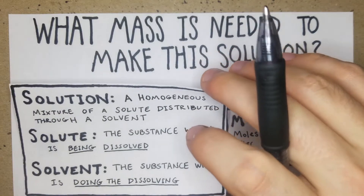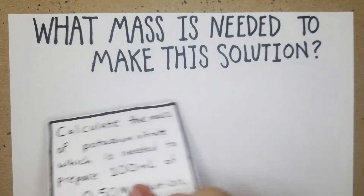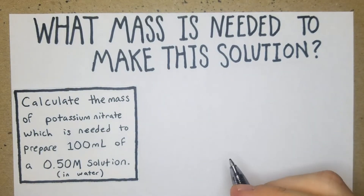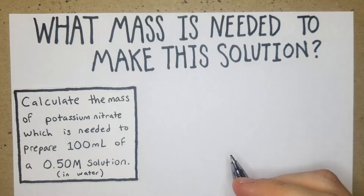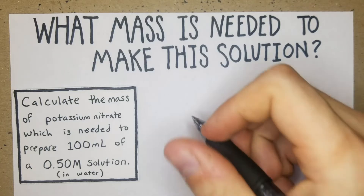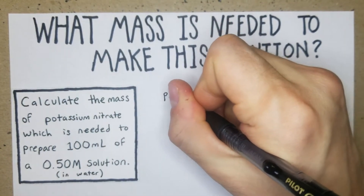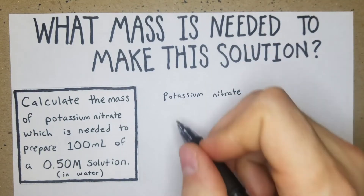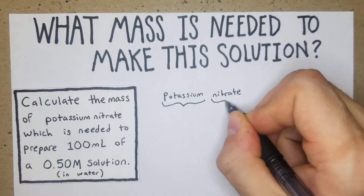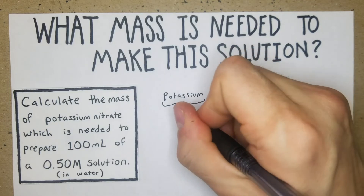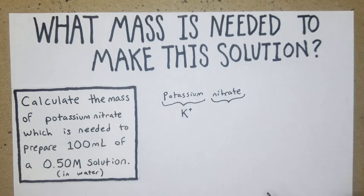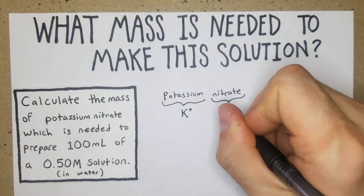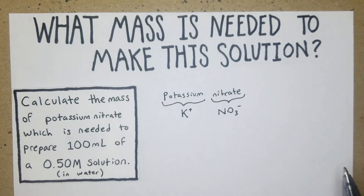Without further ado, the first problem: calculate the mass of potassium nitrate needed to prepare 100 mL of a 0.5 molar solution in water. First, what is potassium nitrate? If it's an element, just write it out with whatever charge is associated. Nitrate is NO₃⁻, and potassium is K⁺.